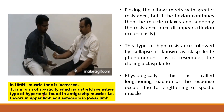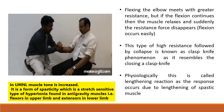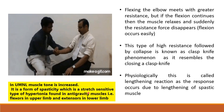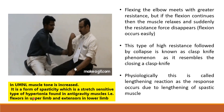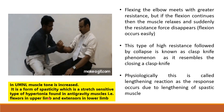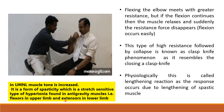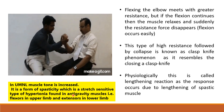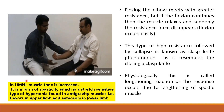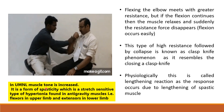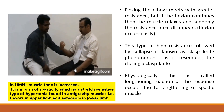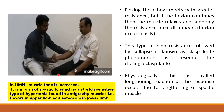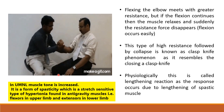Where is this hypertonia found? In the antigravity muscles. The flexors of the upper limb are the antigravity muscles, and the extensors of the lower limb are the antigravity muscles. So in upper motor neuron lesion, there will be hypertonia in these antigravity muscles, and the type of hypertonia is stretch-sensitive hypertonia.